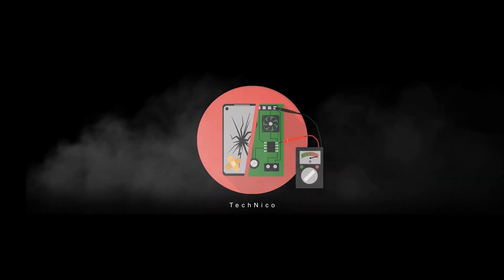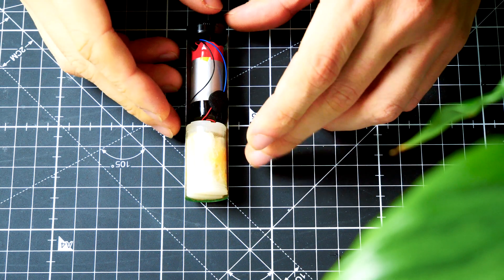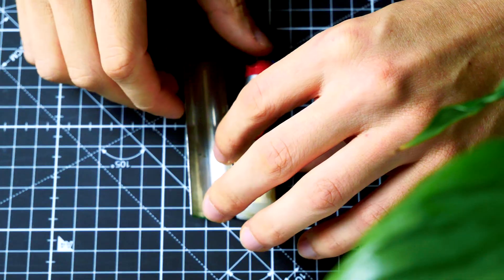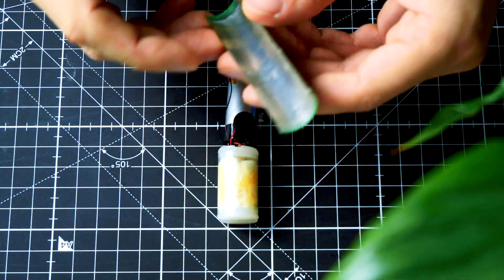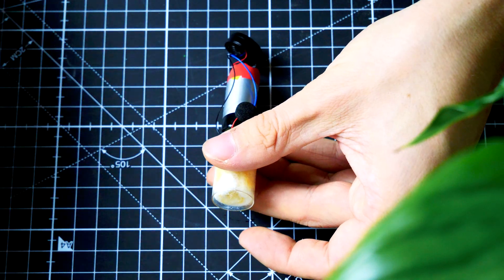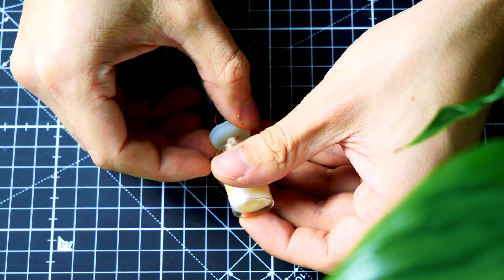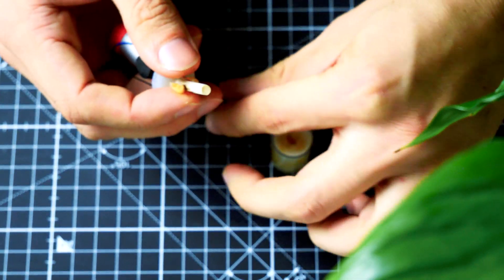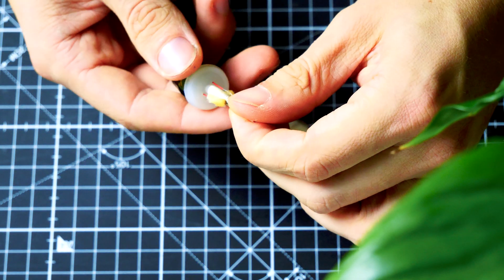As you can see the pen is very simple. There are three sections. The first one beneath the mouthpiece is the vaping chamber, a piece of wire stuck inside some cotton soaked with liquid. If the wire heats up, the liquid evaporates.